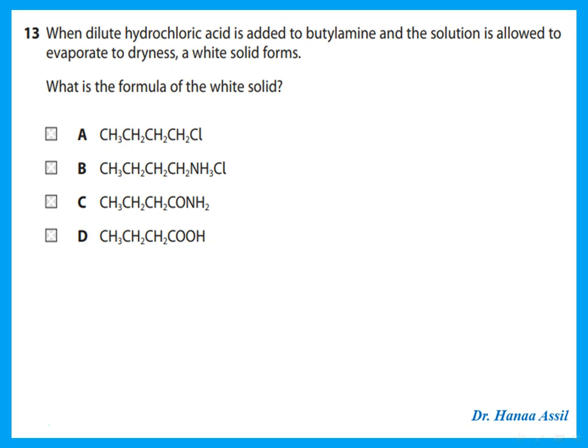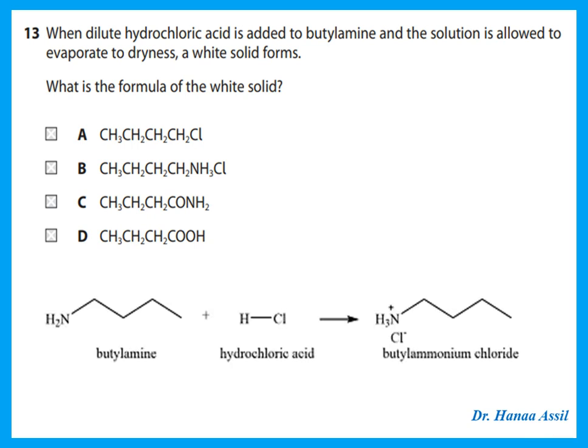When dilute hydrochloric acid is added to butylamine and the solution is allowed to evaporate to dryness, a white solid forms. Butylamine is four carbons with an –NH₂ group. Adding HCl forms an ammonium chloride salt. The structure is four carbons with –NH₃⁺Cl⁻ instead of –NH₂, as shown in option B.